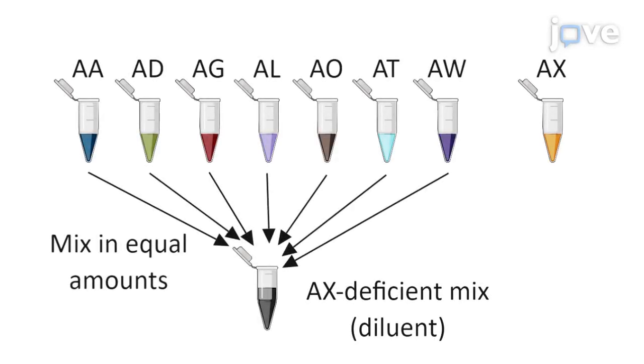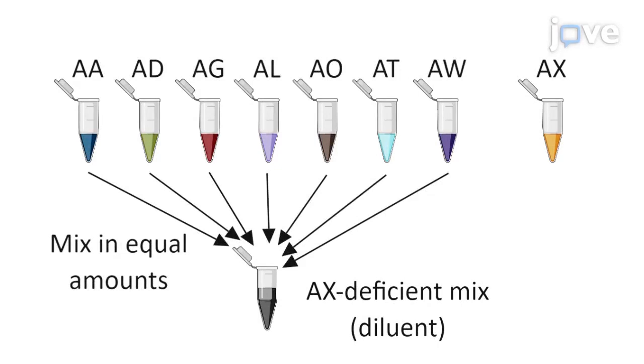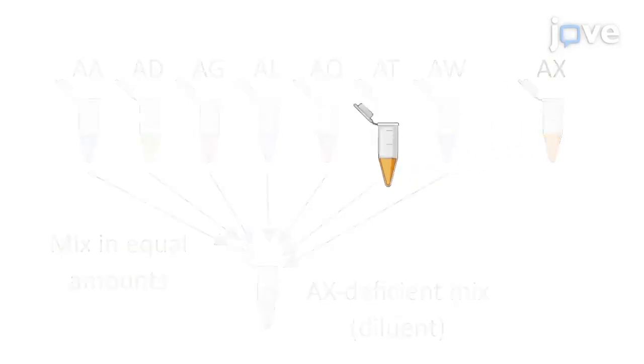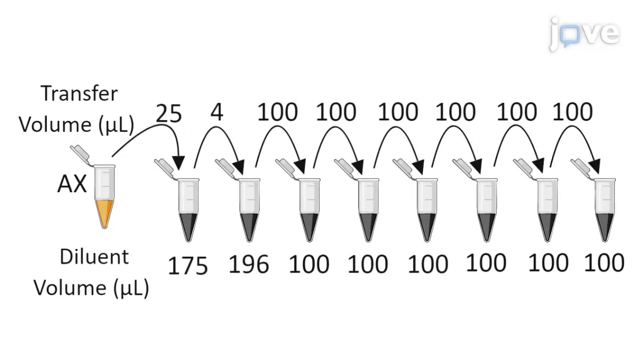Create a pool of genomic DNA that contains every barcode except for one. Use this pool as the diluent to perform a dilution series with genomic DNA containing the single remaining barcode.